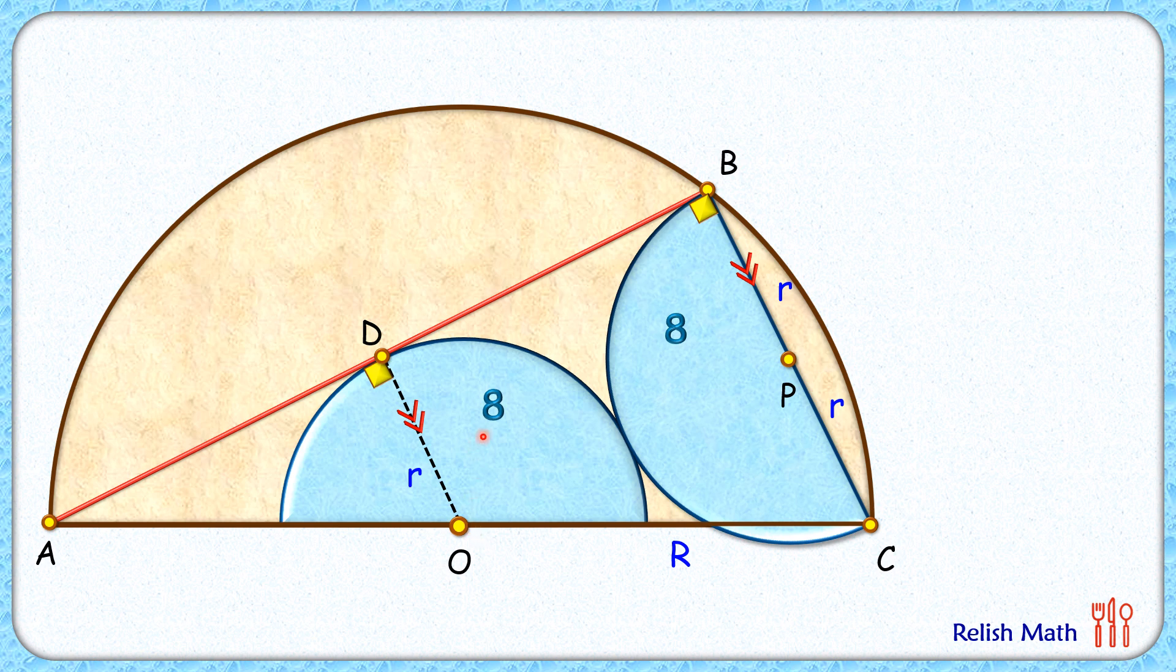Now we know that when two circles are touching each other, that is these two blue circles are touching, then their centers point O and point P, and the point of contact, they lie in a straight line. And this length here is small r and this also is small r.